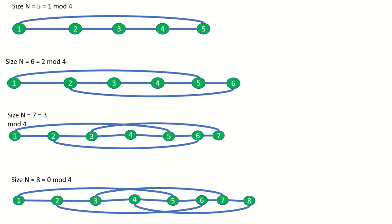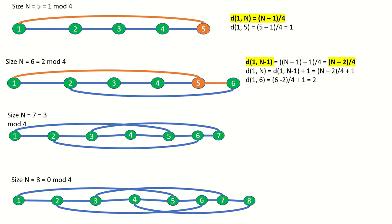Now let's just examine one more type of graph: skip 4 graphs. For n equals 5, or 1 mod 4, we can get to the last vertex in one step, or n minus 1 over 4 steps. I encourage you to think about why this is true. For size n equals 6, or 2 mod 4, we can get to the second-to-last vertex in one step or the last vertex in two steps, which is n minus 2 over 4 plus 1.